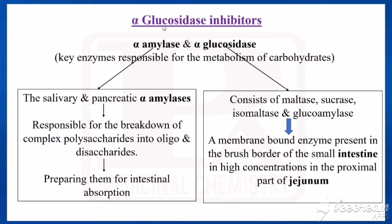Dear students, today we are going to see alpha-glucosidase inhibitors. Alpha-amylase and alpha-glucosidase are the two key enzymes responsible for the metabolism of carbohydrate.